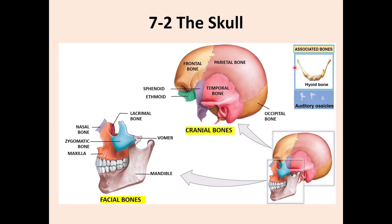Associated bones: one is the hyoid bone, which is a single bone in the neck. Different muscles attach to it - you will see the importance of that when we get to chapter 11. There are also auditory ossicles, meaning small bones, and there are three of them on each side, located inside the temporal bone.